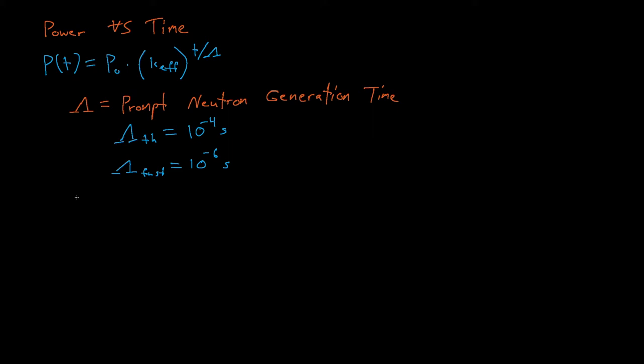If k effective is greater than 1, then each step in our chain reaction will, on average, generate more neutrons and increase the power of our system. So let's say we insert a small 20-cent reactivity insertion into our system. We'll discuss what cents and dollars mean later, but for now just know that this is a relatively minor change in our system.